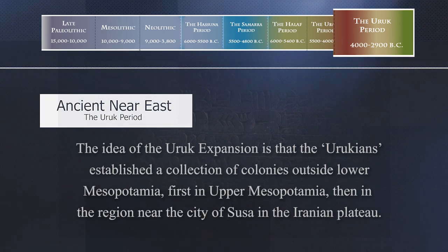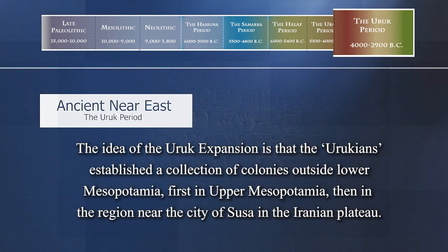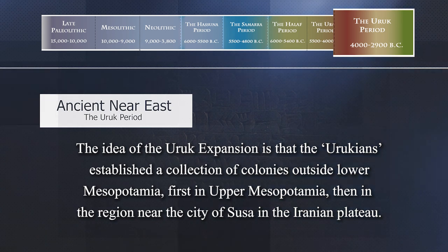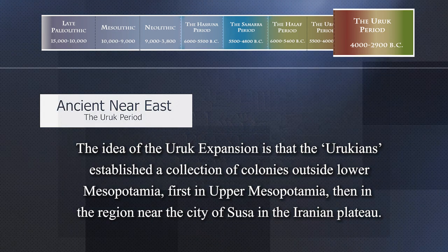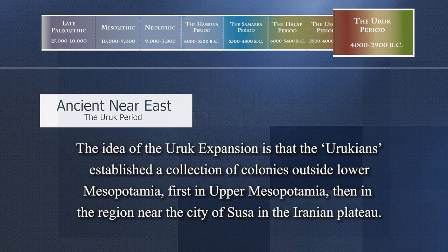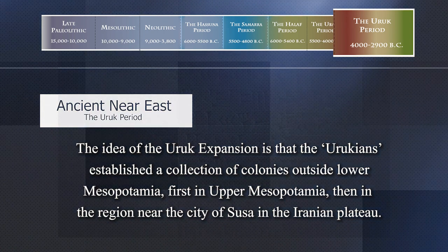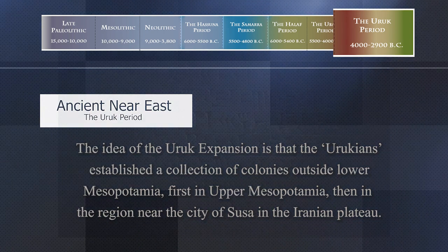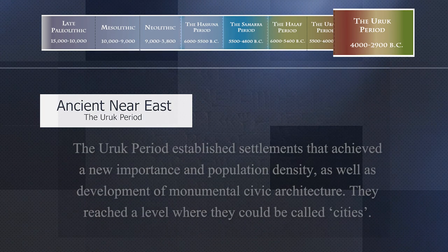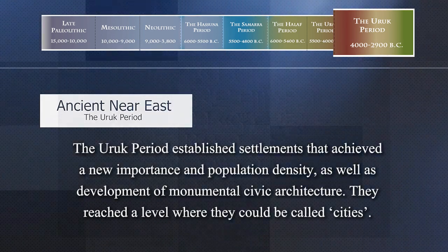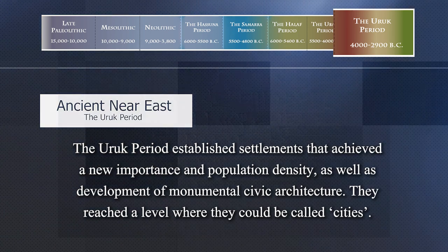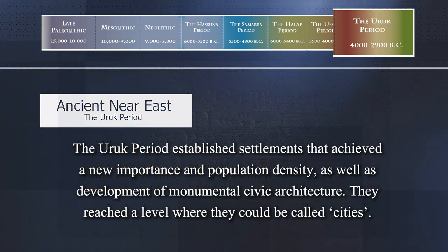In a nutshell, the idea of the Uruk expansion is that the Urukians established a collection of colonies outside Lower Mesopotamia — first in Upper Mesopotamia, then in the region near the city of Susa, called Susiana, in the Iranian plateau. This model has been criticized due to a lack of a complete picture of the region. What is known is that the Uruk period established settlements that achieved a new importance in population density as well as development of monumental civic architecture. They reached a level where they could properly be called cities.